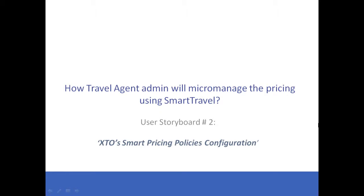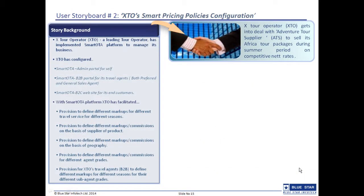Now let's take a look at the other side of the coin — how travel agents make use of Smart Travel to micromanage their pricing. Let's take the example of XTO operator who has implemented Smart OTA to manage his business. XTO will have to configure an admin portal for itself, a B2B portal for its travel agents, and a B2C website for its end customers. Smart Travel enables XTO to define different markups for different travel services for different seasons, as well as configure different markup and commission based on supplier, geography, and different agent grades. It also enables XTO's travel agents to define different markups for different seasons and for their different sub-agent grades.